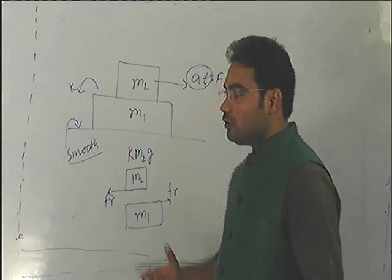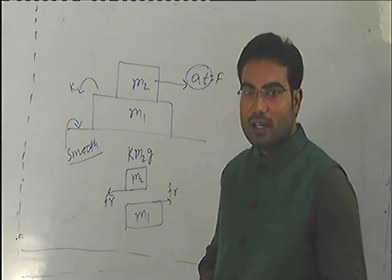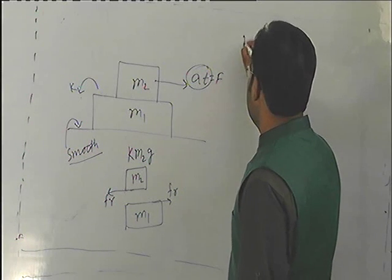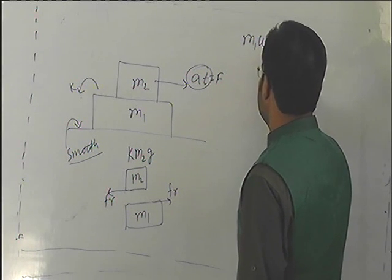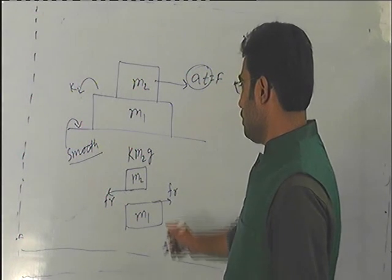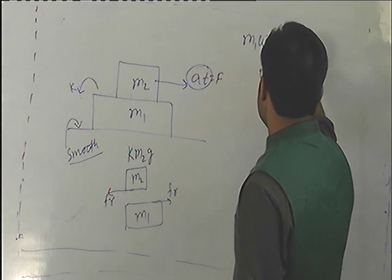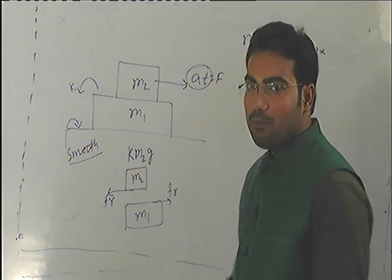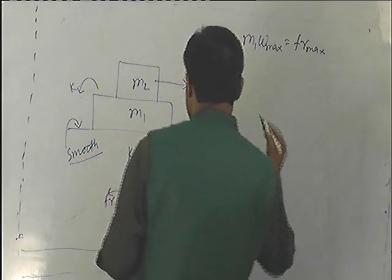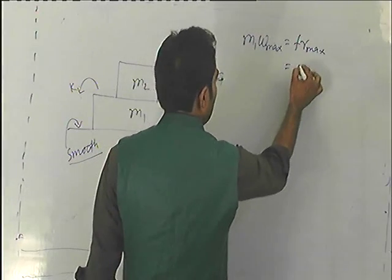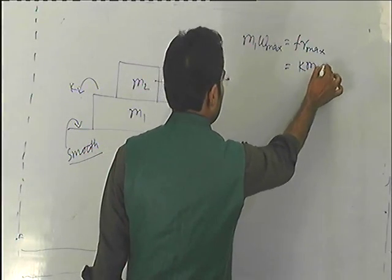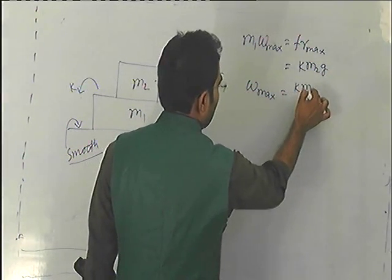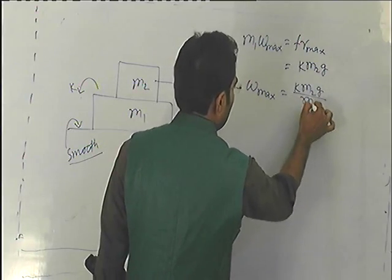The motion of m1 has a maximum acceleration. M1 times w maximum equals the maximum friction force. The maximum friction force is K m2 g. So the maximum acceleration of m1 is K m2 g divided by m1.